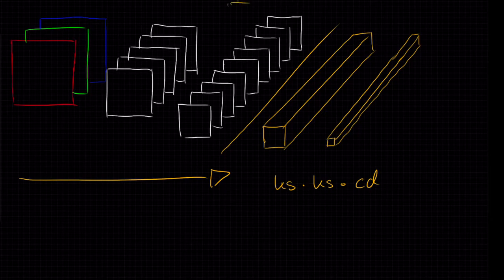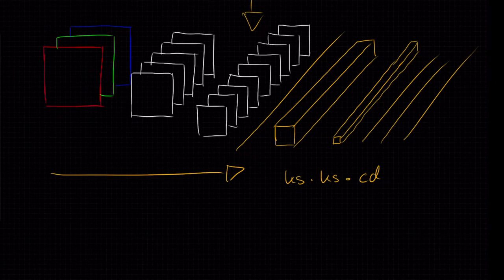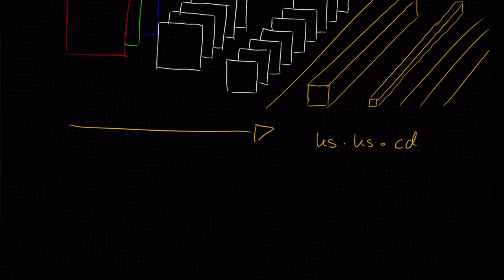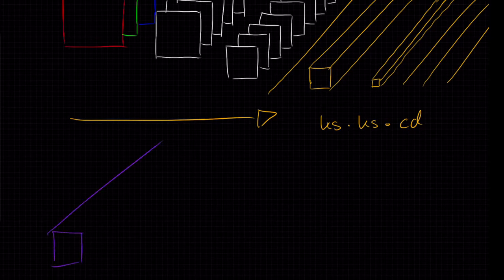So here we have nine feature maps and so we would for example want maybe four filters, each with a one by one kernel size. And this gives us then feature maps of the same size but with a reduced channel depth. So for example we go from something like this to maybe this.